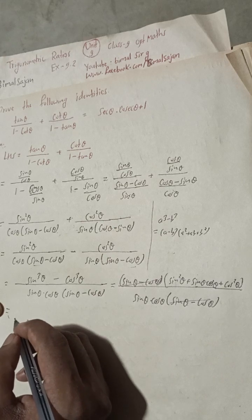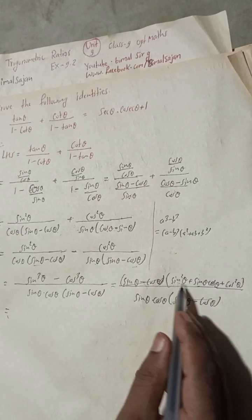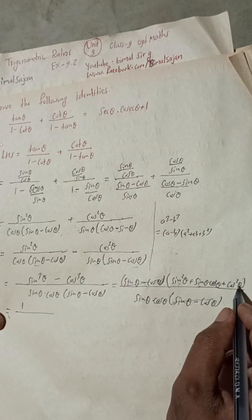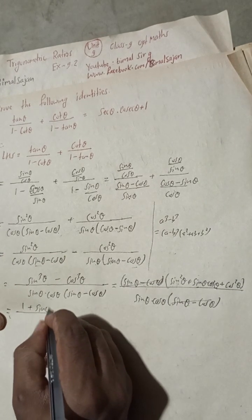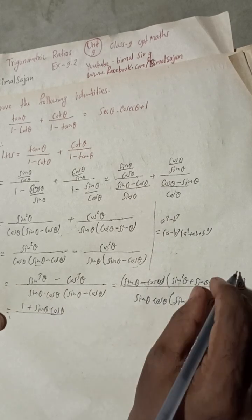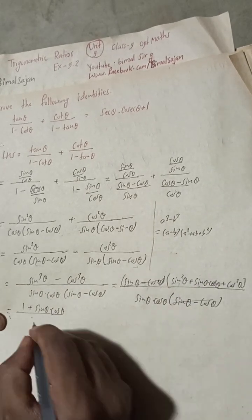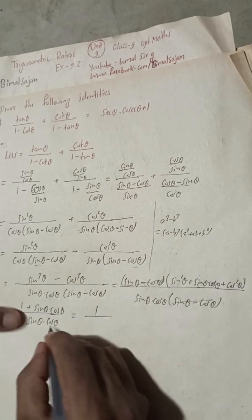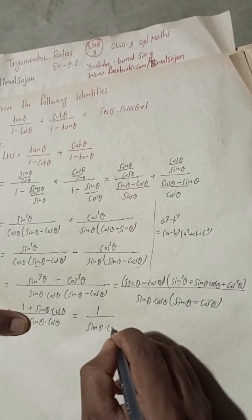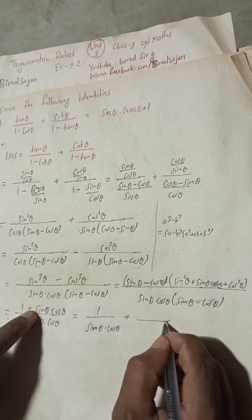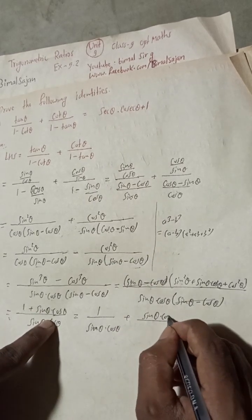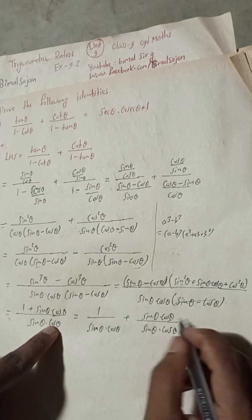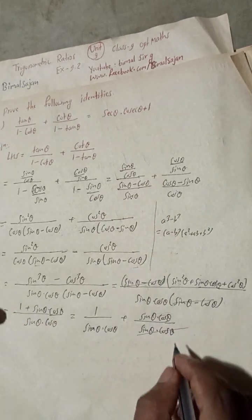Now here sin²θ + cos²θ equals one. So we have 1 plus sin θ·cos θ in the numerator, and sin θ·cos θ at the denominator. Splitting: 1 / (sin θ · cos θ) plus sin θ·cos θ / (sin θ·cos θ) — the second term cancels to give 1.